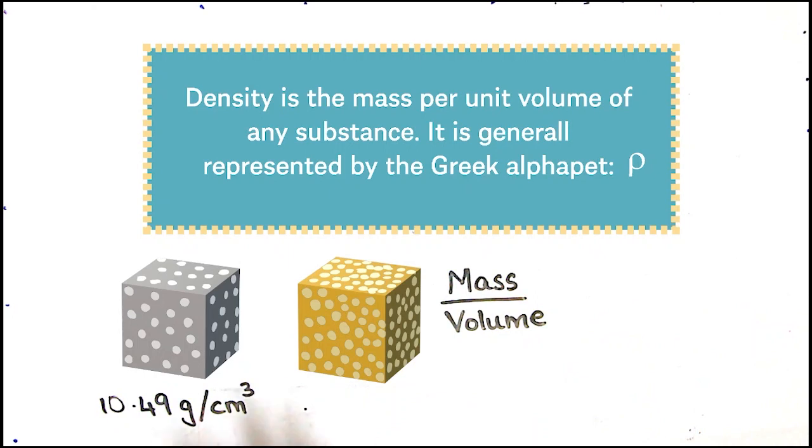Because 10.49 grams is how much mass is present in one unit volume, in one centimeter cubed of silver. Now for the gold, if we were to figure out the density, this would be 19.3 grams per centimeter cubed, and that is the density of gold. That is simple, right?